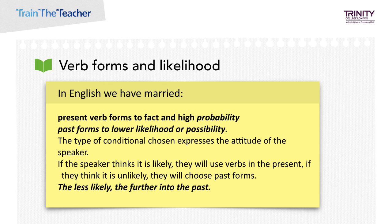The reason for this is because in English we have married present verb forms to fact and high probability, and past forms to lower likelihood or possibility. The type of conditional chosen expresses the attitude of the speaker. If the speaker thinks it is likely, they will use verbs in the present — if Frank jumps. If they think it is unlikely, they will choose past forms — if Frank jumped, or if Frank had jumped. The less likely the situation, the further into the past it is expressed.